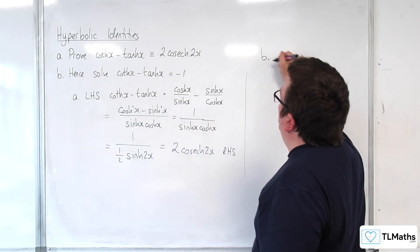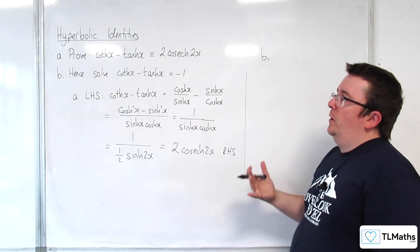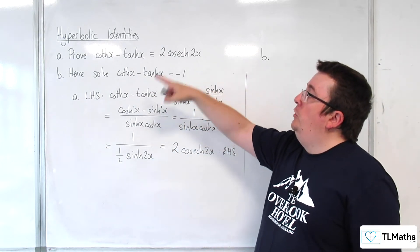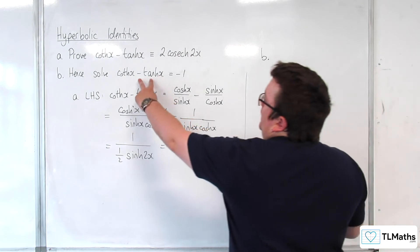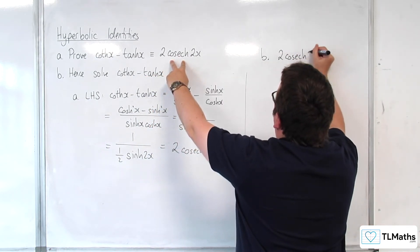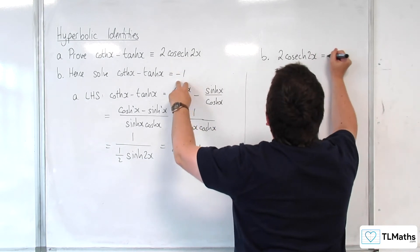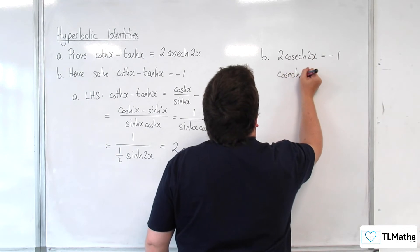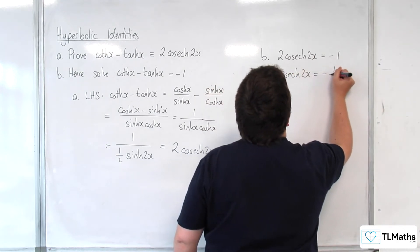So let's take a look at part B. Now the reason why the question asks us to do that is because we want to hence solve. So we use the previous result. That left hand side we're going to replace with 2 cosh 2x, which is equal to minus 1. So cosh of 2x is equal to minus 1 half.